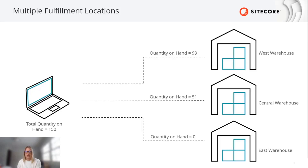You create the logic that aligns with your business. Just make sure to indicate which inventory record will be used so that the inventory can decrement from that location upon order submission.